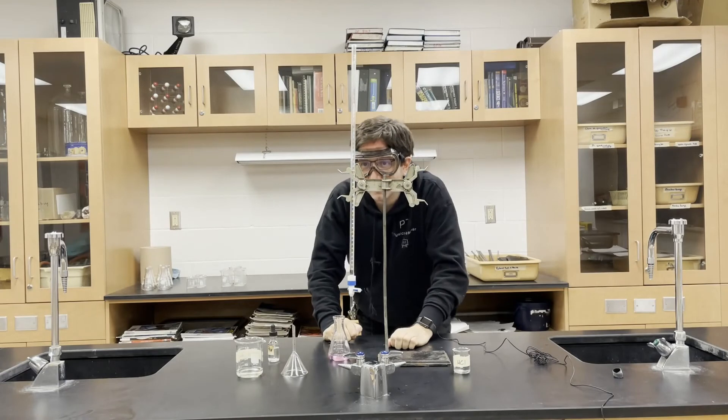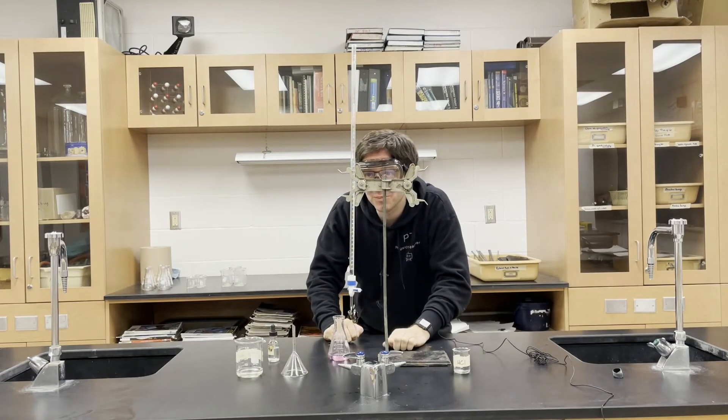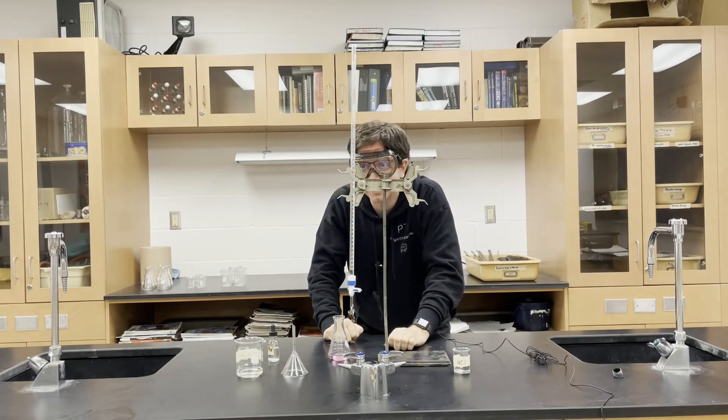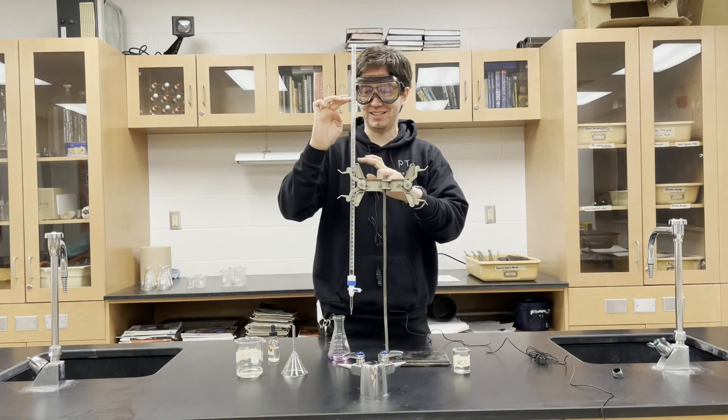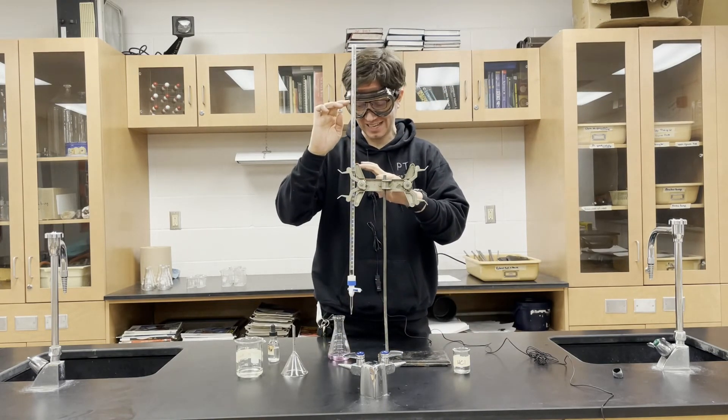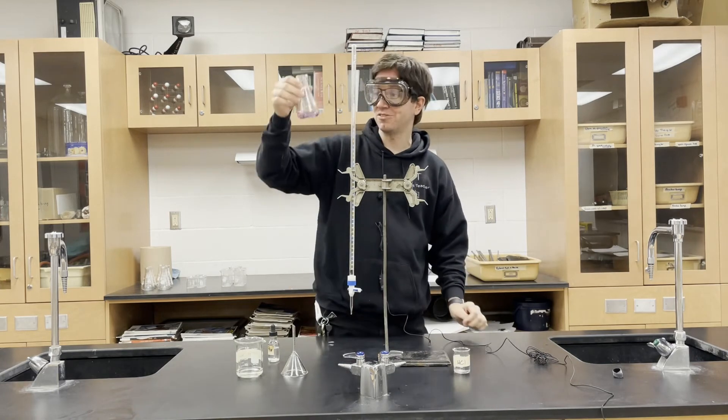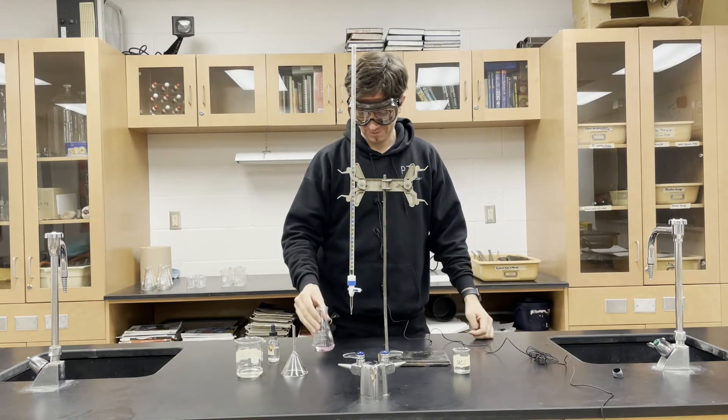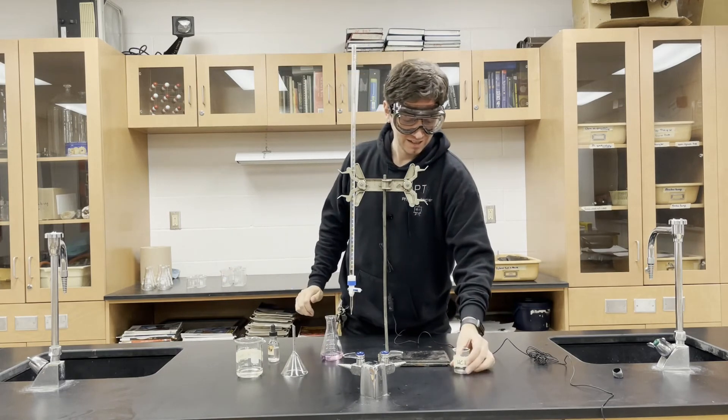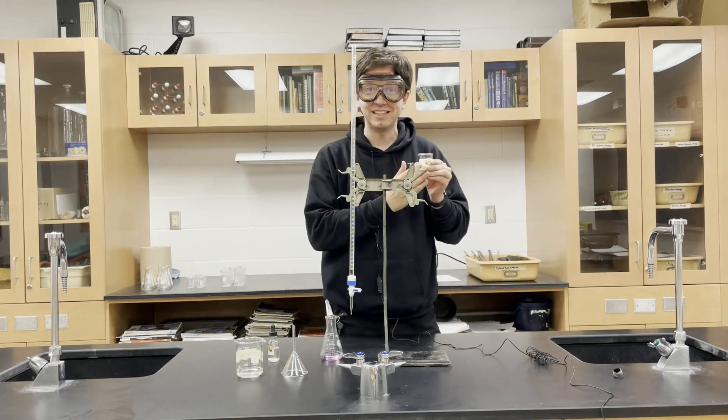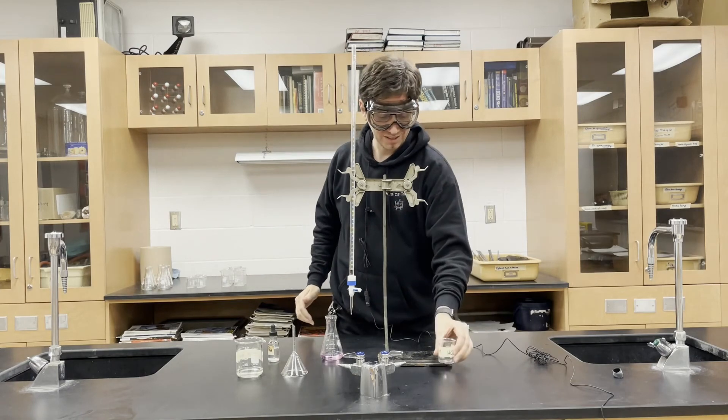We're going to check our final reading and it appears to be exactly 26 milliliters. So with that information, we can find the difference and figure out exactly how much sodium hydroxide we put in here. Knowing the volume and concentration of the sodium hydroxide and the volume of hydrochloric acid, you can figure out the concentration of the hydrochloric acid.